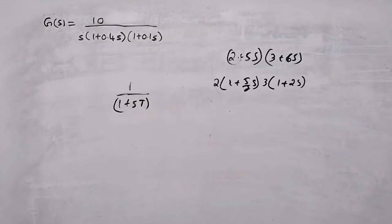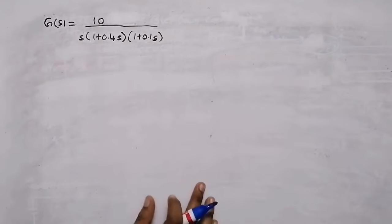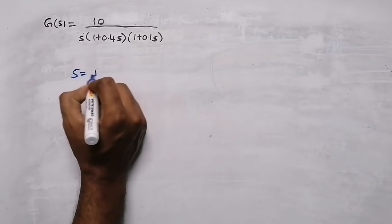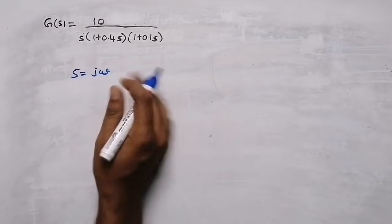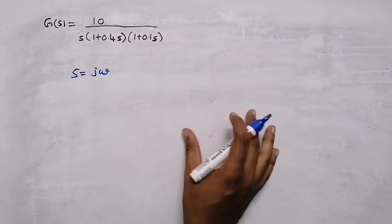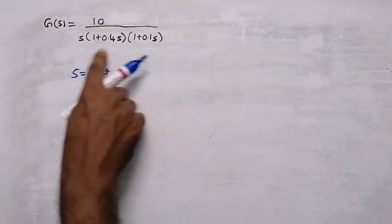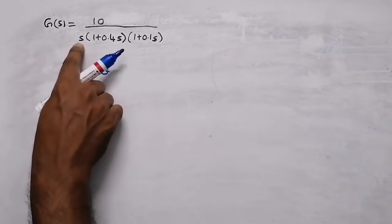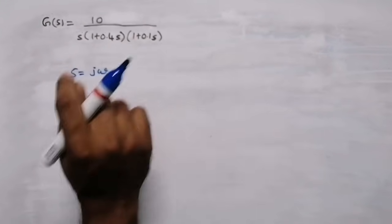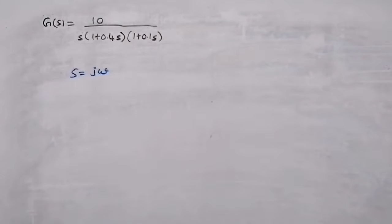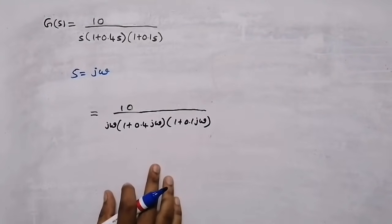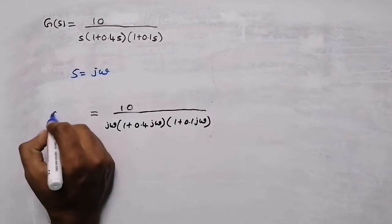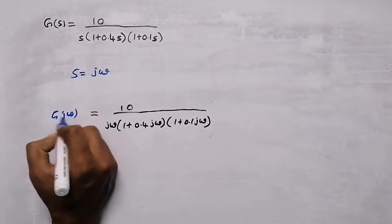After putting the question in standard form, substitute s equal to jω because we are drawing the plot in the frequency domain. Wherever there is s, replace it with jω. So G(s) becomes G(jω).